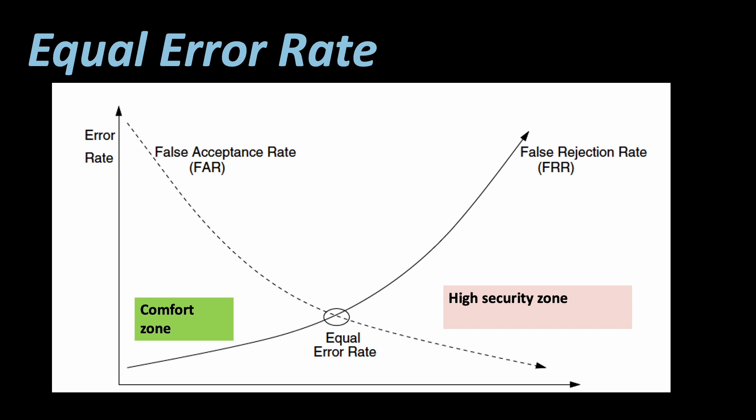So we have, as usual, the security utility trade-off. And where these two lines meet, the both error rates, we have the equal error rate, which we talked about briefly before. This is usually the sweet spot where you want your authentication systems to operate.